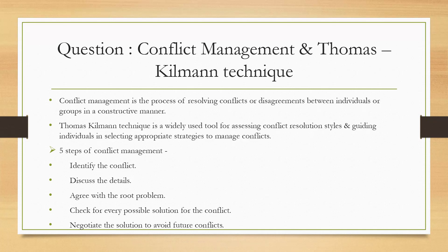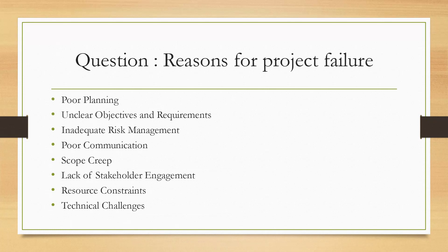Question 9: What are the reasons for project failure? These include poor planning, unclear objectives and requirements, inadequate risk management, poor communication, scope creep, lack of stakeholder engagement, resource constraints, and technical challenges. In your document, add additional points of your own thinking, write a definition for each point — for example, explain what is meant by poor planning — and provide thorough explanations for each.